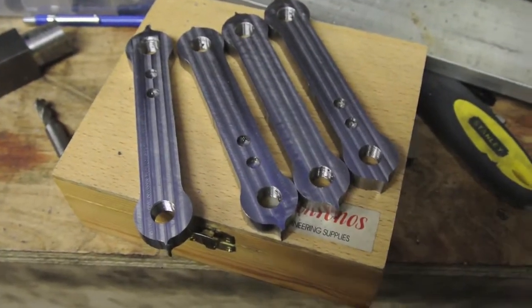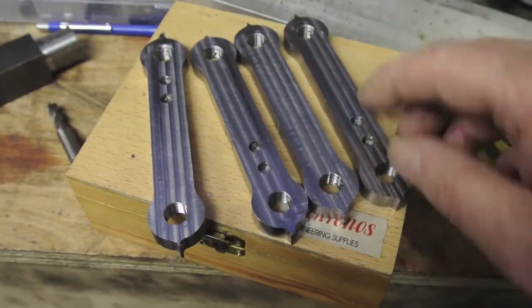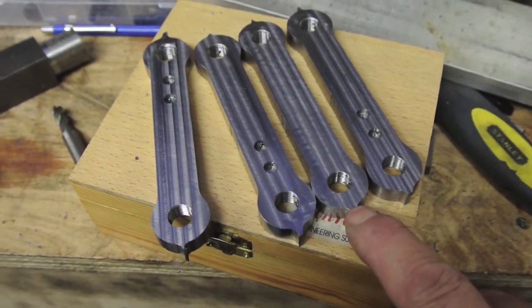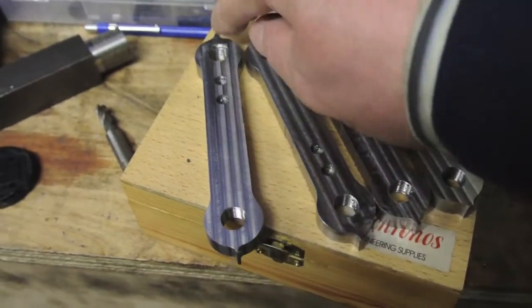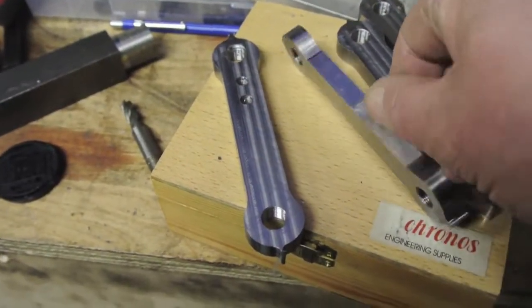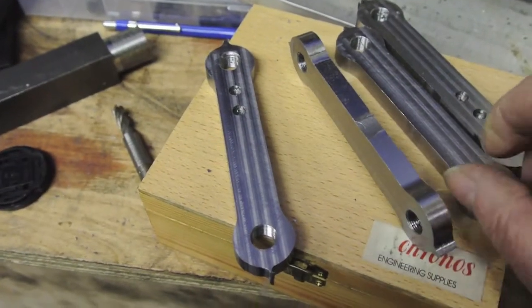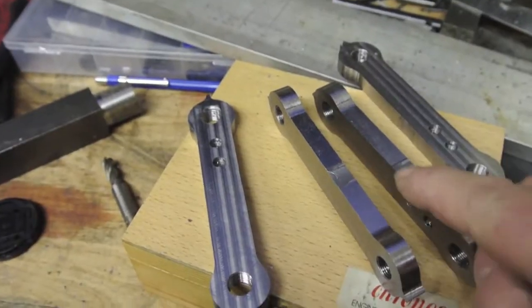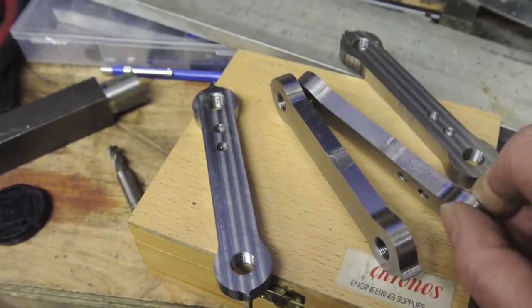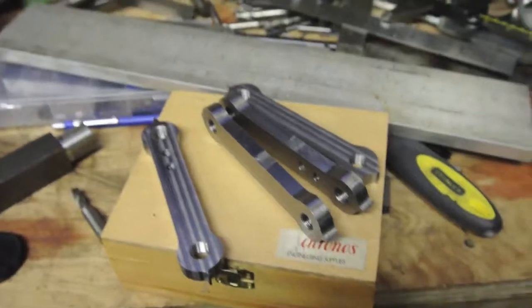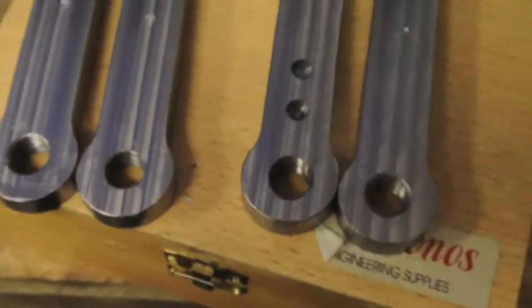You can see the finished or almost finished articles. I've just got to get rid of the tabs on both ends. The ones on the sides I took off on the manual mill very quickly, very roughly actually. I'll just blend those in with a file. Almost finished.